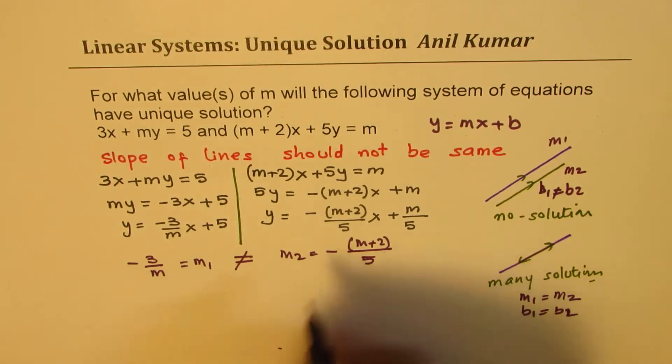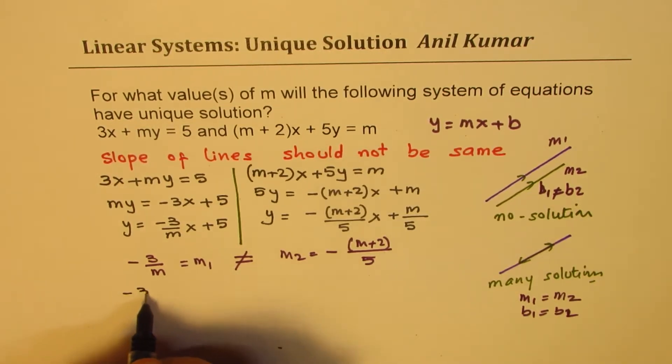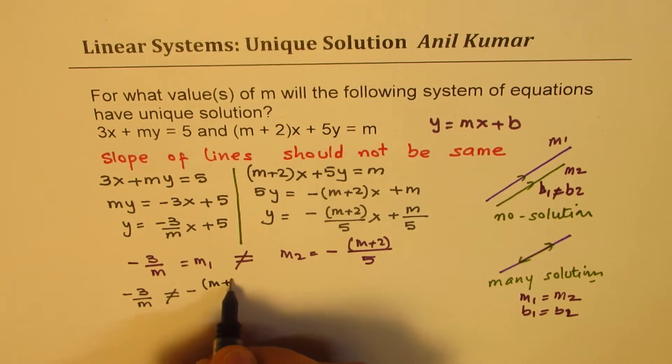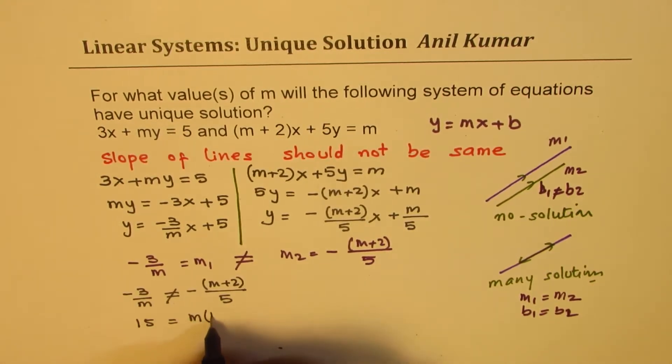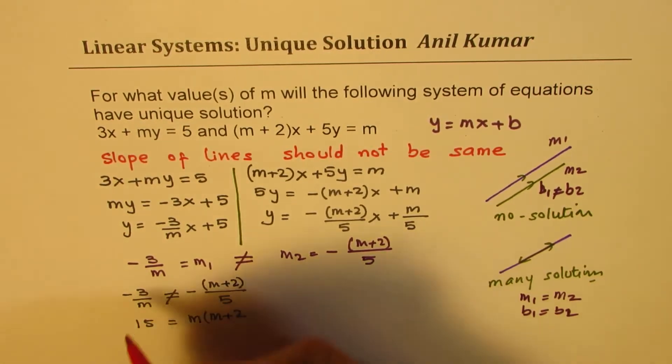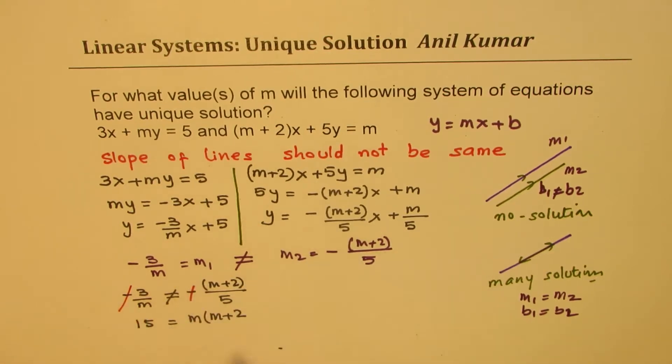So we'll just equate and solve. We have minus 3 over m should not be equal to minus of m plus 2 over 5. Now to solve this we can cross multiply and simplify, so we get 15 equals m times m plus 2. We cancelled the negatives for the two equations and got this quadratic equation to solve.